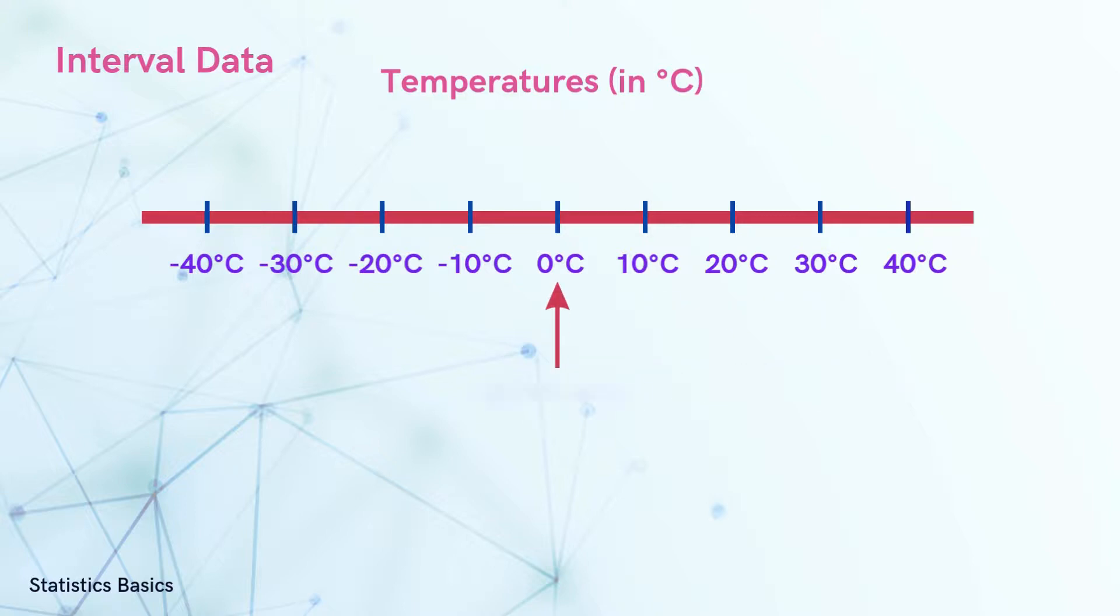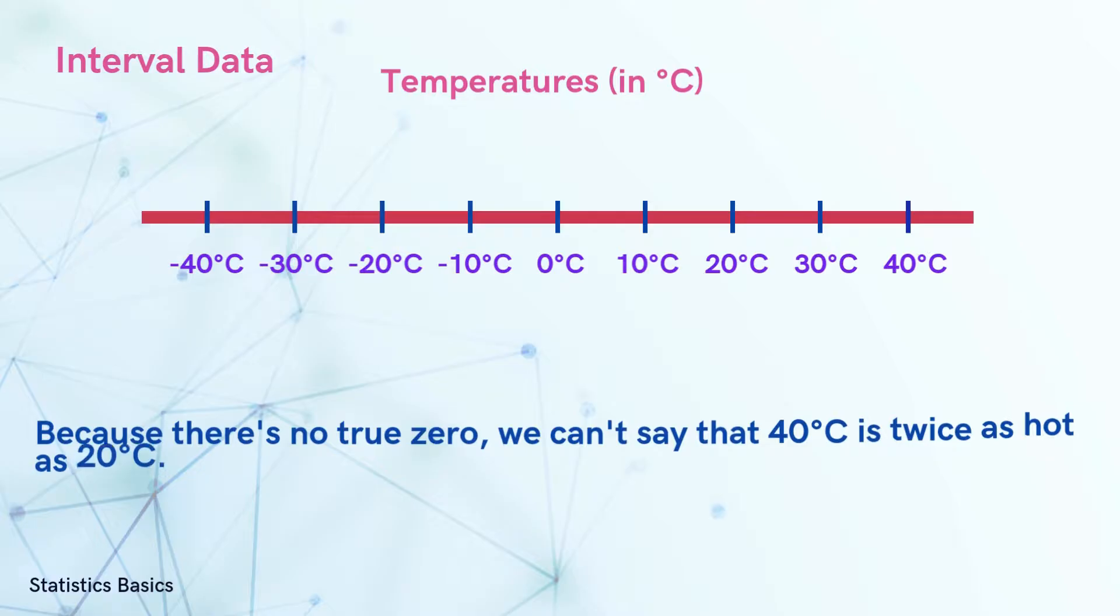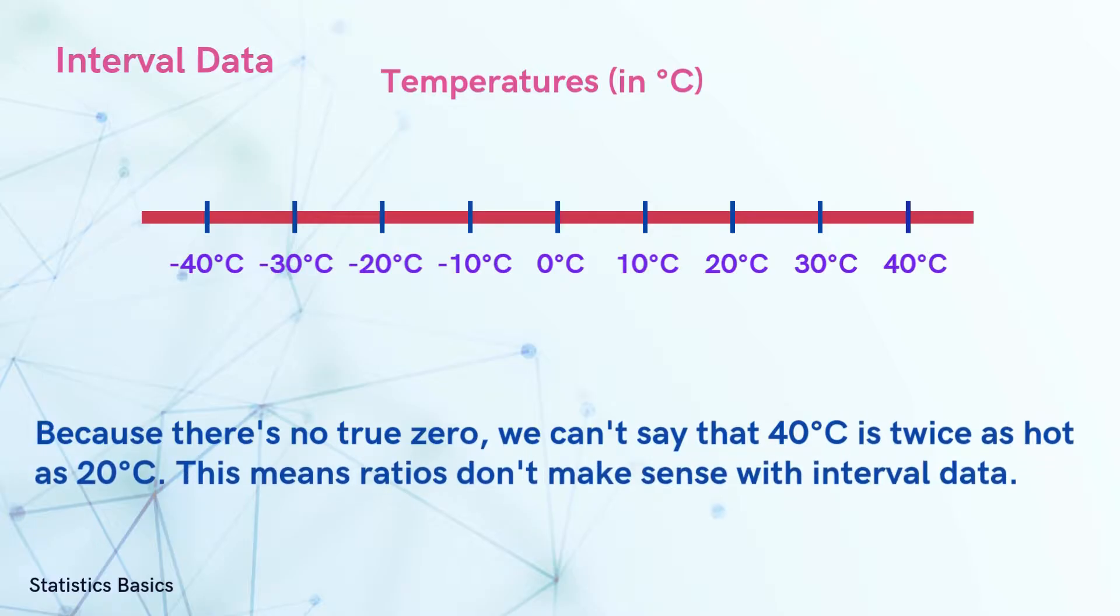However, 0 degrees Celsius doesn't mean there's no temperature at all. It's just a point on the scale. We can have negative temperatures too. And because there's no true zero, we can't say that 40 degrees Celsius is twice as hot as 20 degrees Celsius. This means ratios don't make sense with interval data.